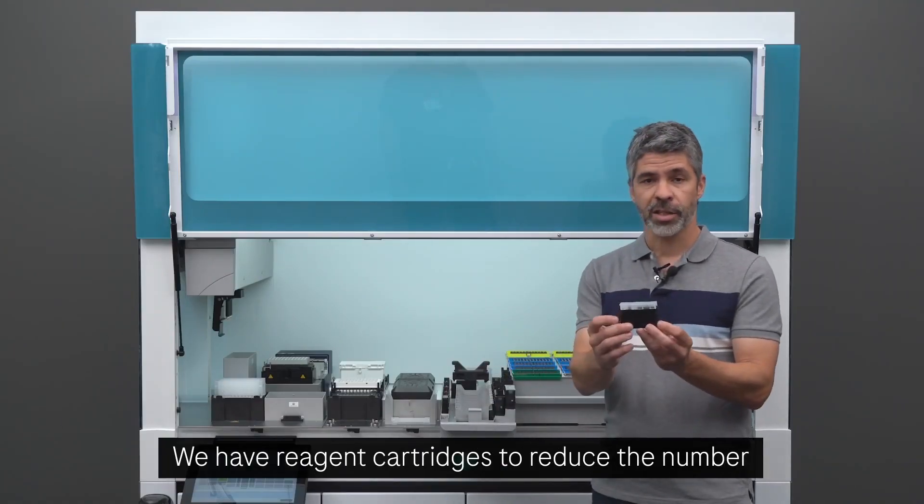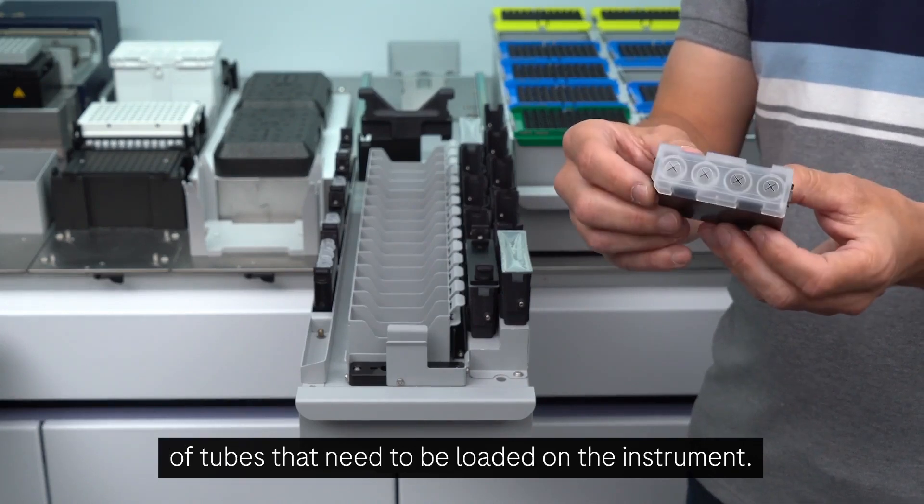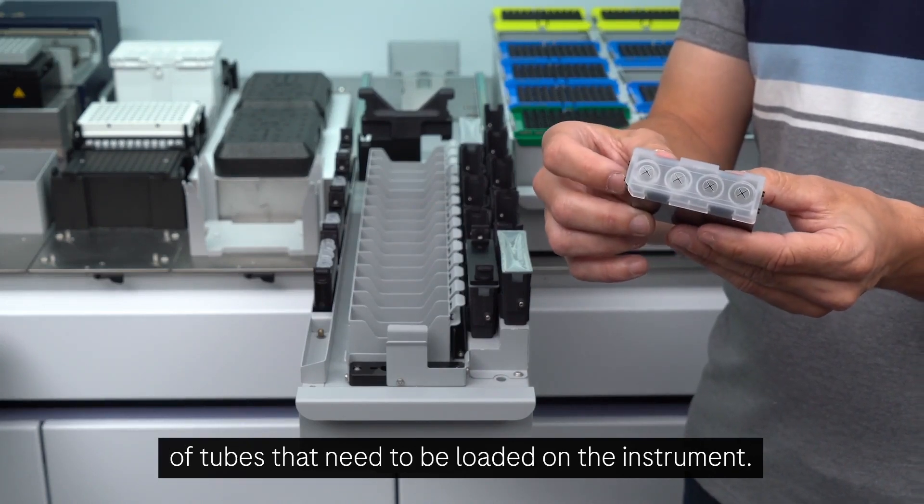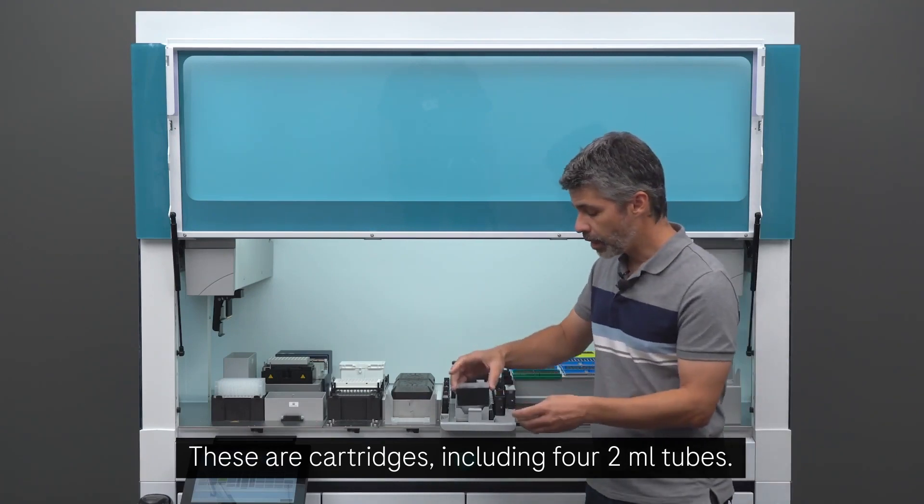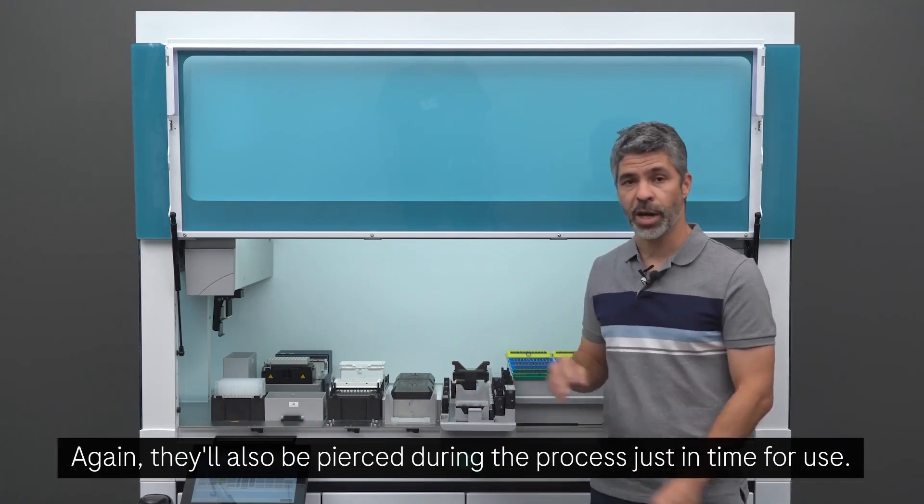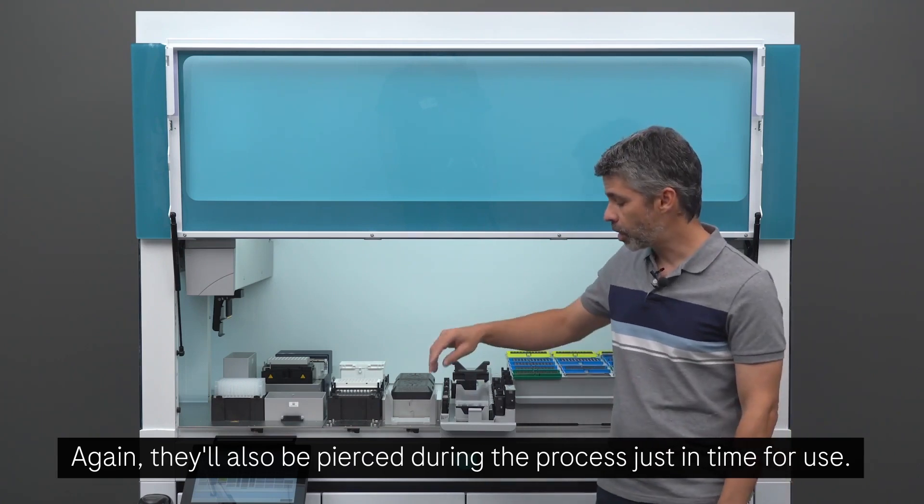We have reagent cartridges to reduce the number of tubes that need to be loaded on the instrument. These are cartridges including four 2 mL tubes. Again, they'll also be pierced during the process just in time for use.